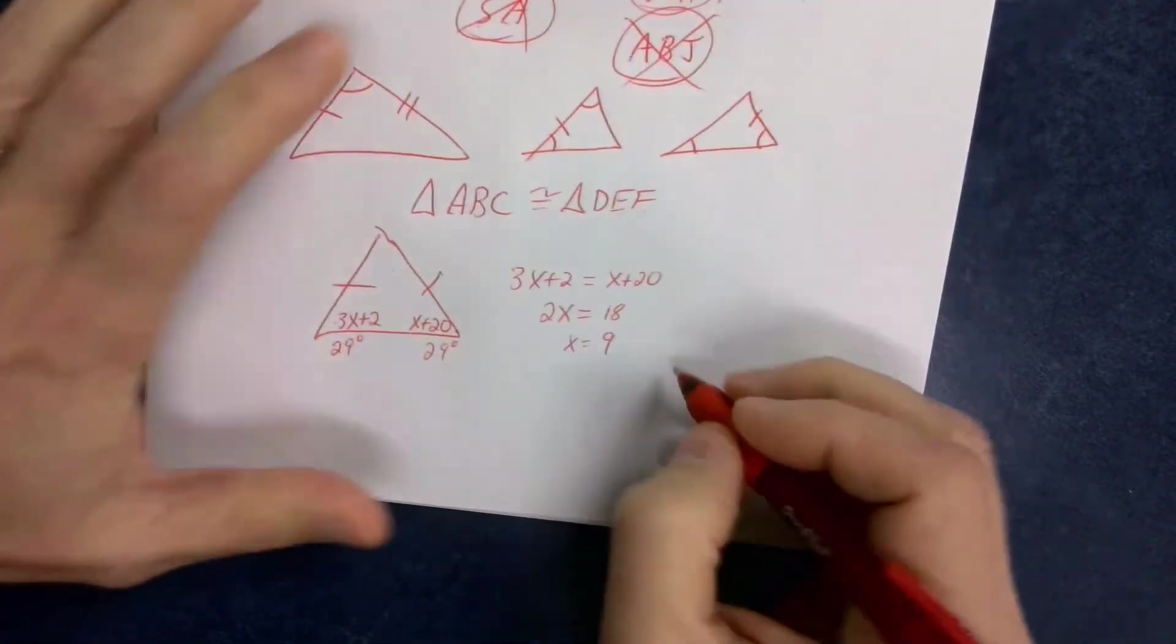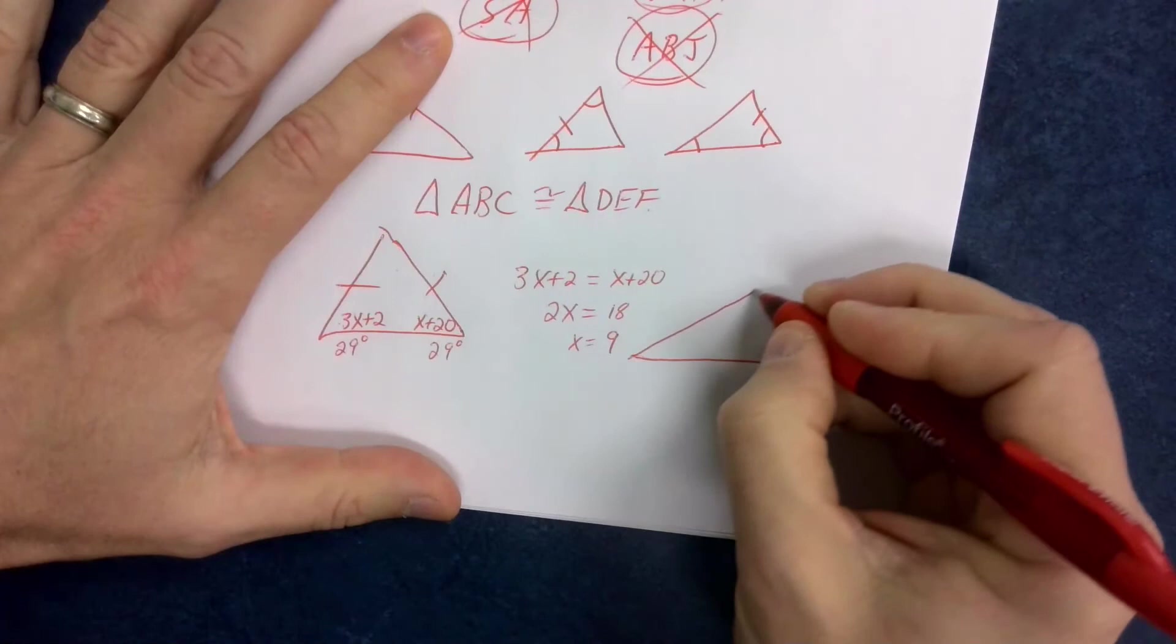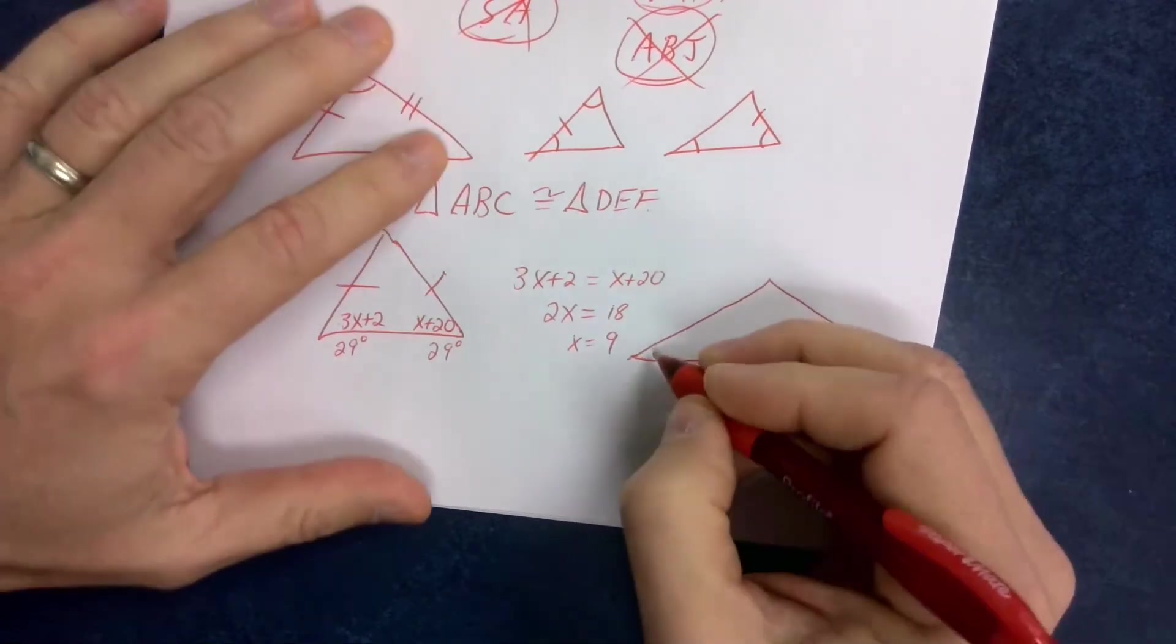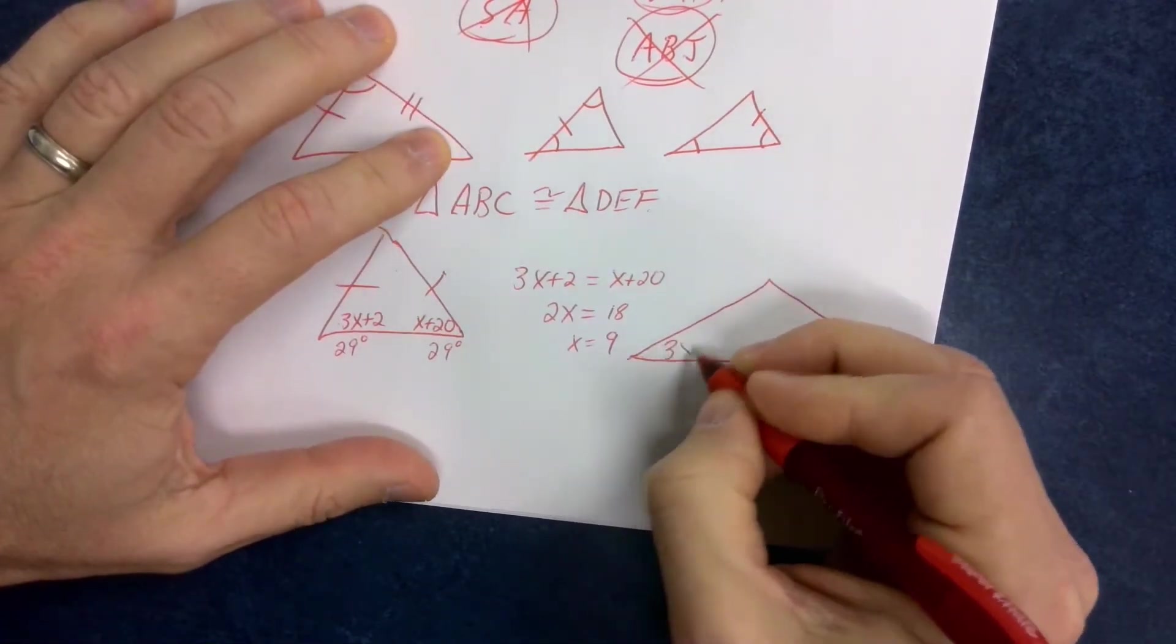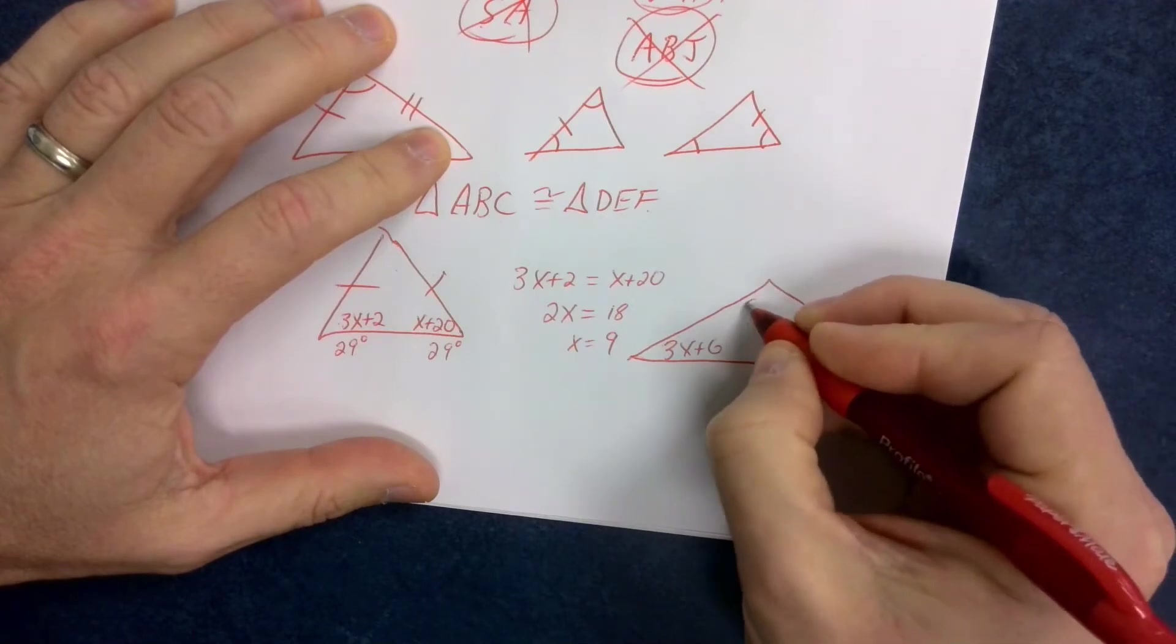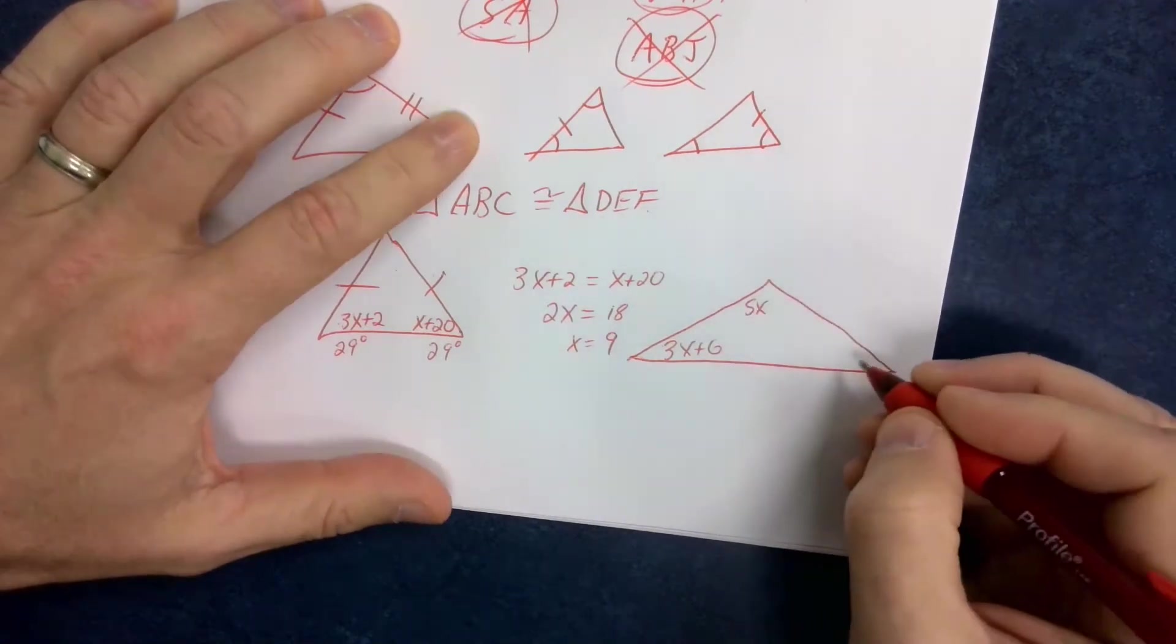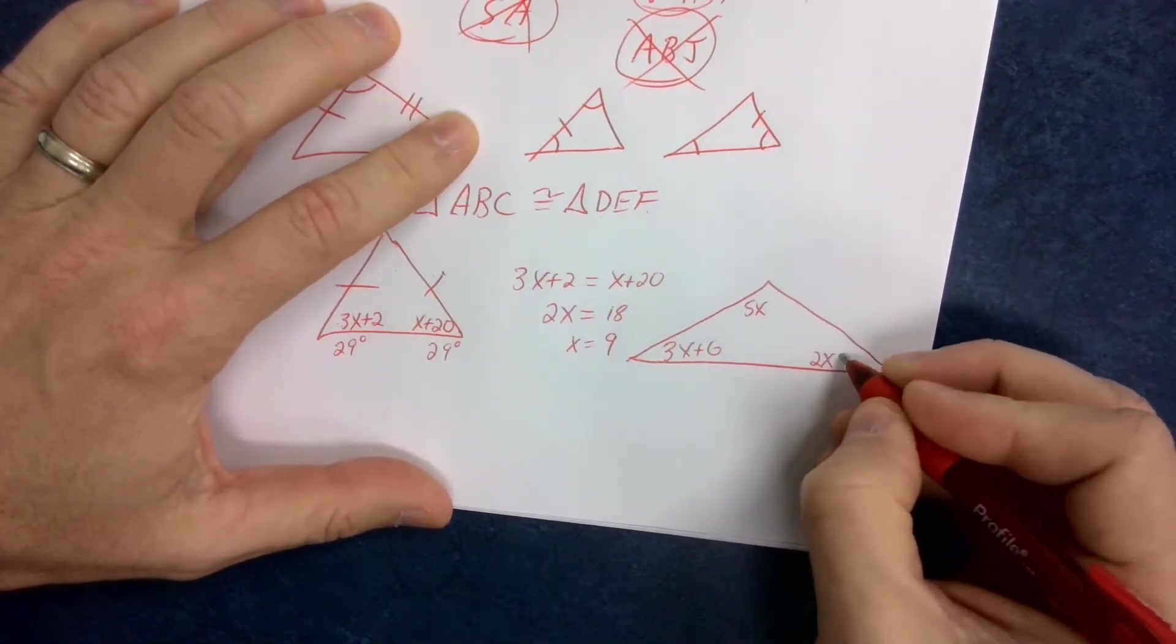And it could be something like this, it could be something like this, where I give you all three of the angles, like this is 3x plus 6, and this is 5x, and this is 2x plus 10,